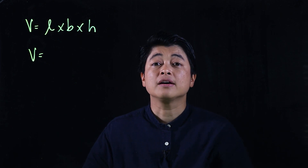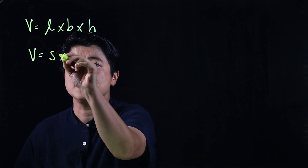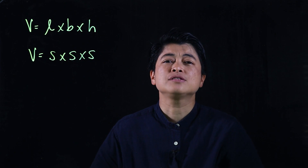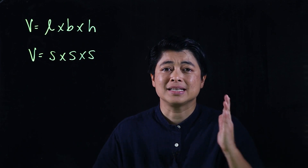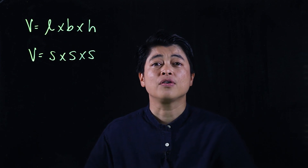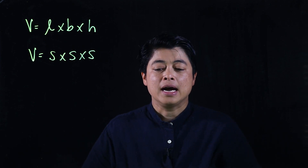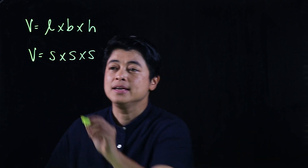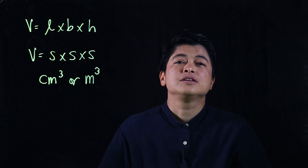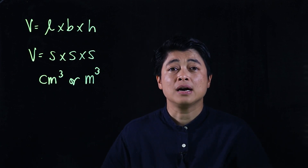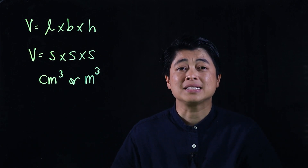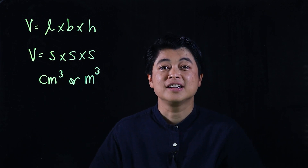The volume of a cube is side times side times side. The side of a cube is often called the edge, so if a problem asks for the measurement of the edge, they're looking for the measurement of the side. The units of measurement for solids are centimeters cubed or meters cubed. As in the last chapter, we want to write down all the givens and the formula so it registers in the brain and builds good long-term habits.